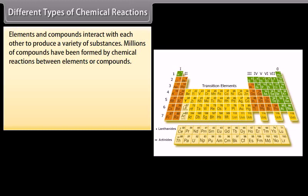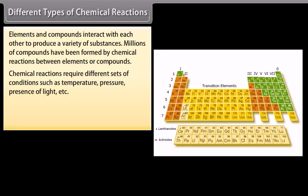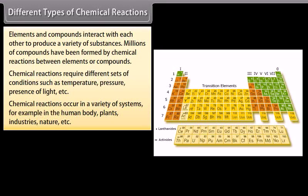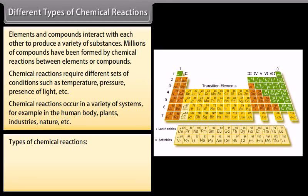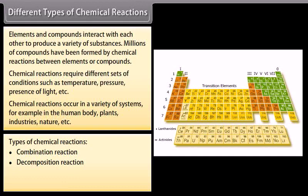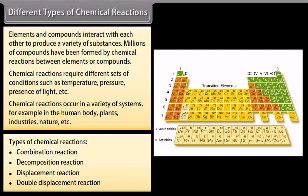Elements and compounds interact with each other to produce a variety of substances. Millions of compounds have been formed by chemical reactions between elements or compounds. Chemical reactions require different sets of conditions such as temperature, pressure, presence of light. Chemical reactions occur in a variety of systems, for example, in the human body, plants, industries, nature. Types of chemical reactions: combination reaction, decomposition reaction, displacement reactions, double displacement reactions.